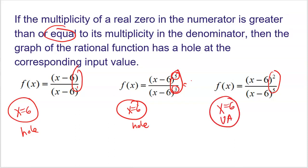If you watched the video on vertical asymptotes, this was explained. What happens is the two x minus sixes in the numerator reduce with two of the x minus sixes in the denominator, leaving x minus six to the third power in the denominator. So x equals six only makes the denominator equal to zero, which is the definition of a vertical asymptote. Be careful if you have multiplicity greater than one — if the multiplicities are one, it's pretty simple, but if they're greater than one, you need to understand this rule.